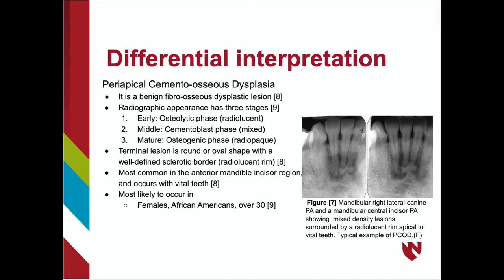Periapical cementoosseous dysplasia is a benign fibroosseous dysplastic lesion, termed PCOD for short. The lesion occurs in three stages: the early phase is osteolytic, the middle phase is cementoblastic, and lastly, the mature phase is osteogenic. Radiographically, the lesion will first appear radiolucent in the osteolytic phase, then will appear as a mix of radiolucent and radiopaque in the cementoblastic phase, and terminally in the osteogenic phase as a radiopaque, round or oval lesion with a well-defined radiolucent sclerotic border. This is in contrast to the radiographic appearance of idiopathic osteosclerosis, which lacks a radiolucent rim or capsule.